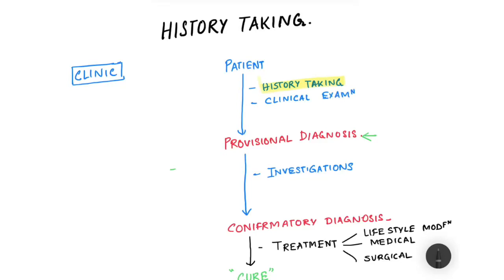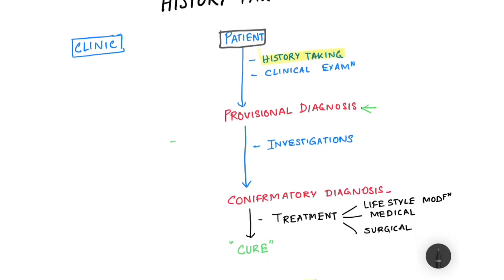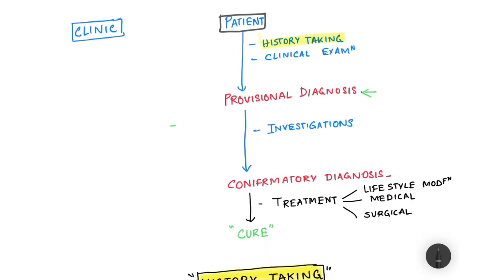Hello everyone, the Nerd Medic here. In this video we're going to learn about how you can take an effective history from a patient. History taking is one of the cornerstones of clinical diagnosis. Whenever you see a patient in your clinic, you do a clinical examination and take a history. Based on this history and clinical examination you come to a provisional diagnosis, after which you order investigations like blood tests, USG, CT scan, etc., leading to a confirmatory diagnosis.